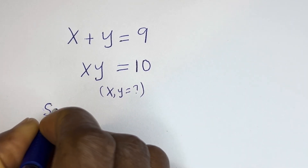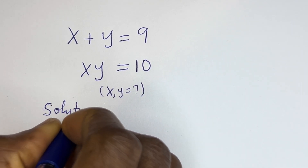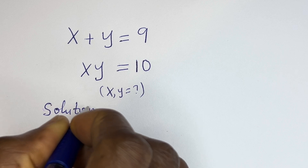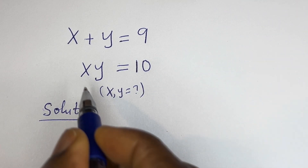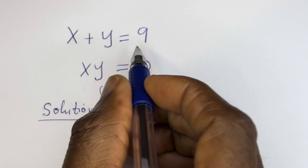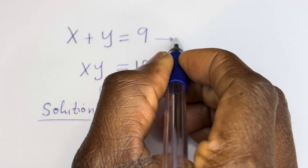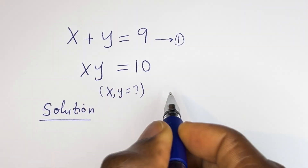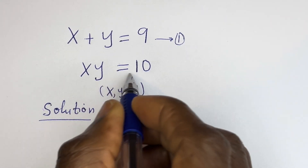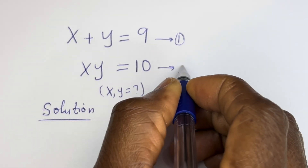Solution. x plus y is equal to 9 — let's call this equation 1. Then x times y is equal to 10 — let's call this equation 2.